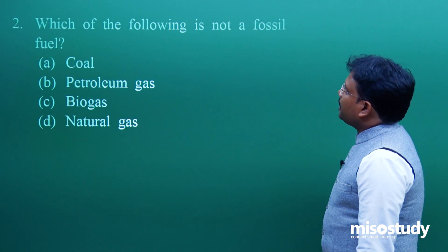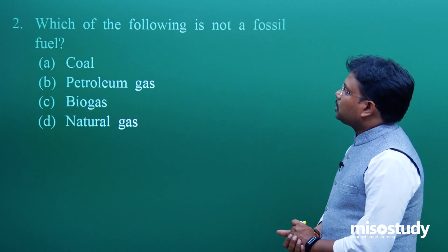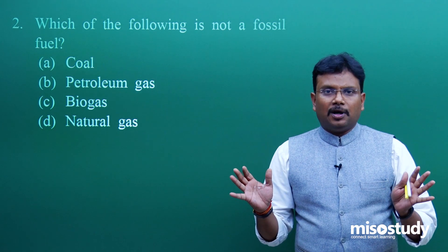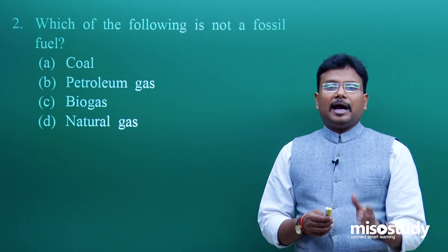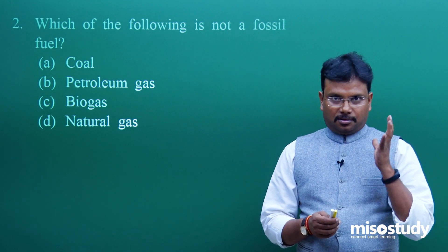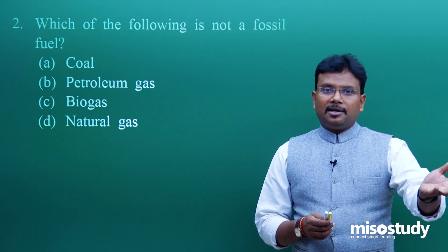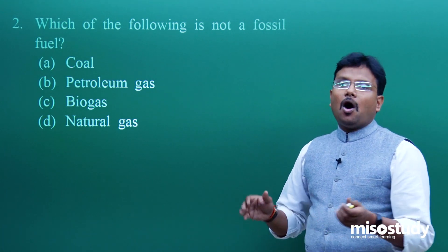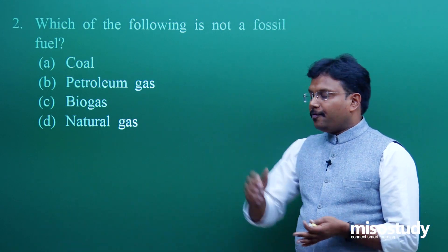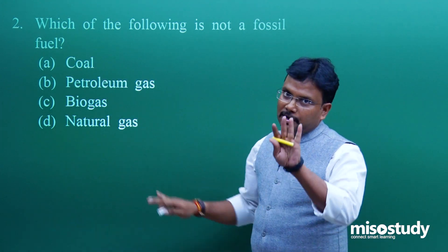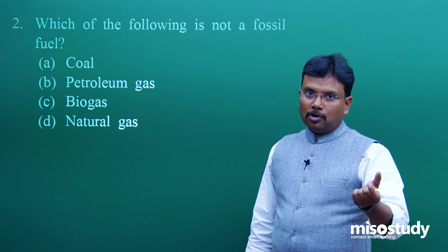Then next question is from your natural resources topic. Which of the following is not a fossil fuel? Students, there are various types of energy resources present in this chapter. Fossil fuel is something that directly comes out by digging the earth. Coal, diesel, petrol, natural gas, LPG that you use in your kitchen, they are all fossil fuels because they have been created by nature in long long years. Coal is fossil fuel, petroleum gas is also a fossil fuel because we get it from oil.